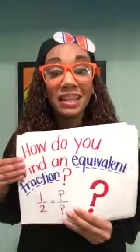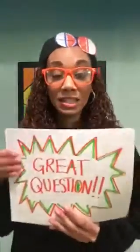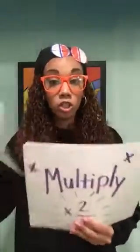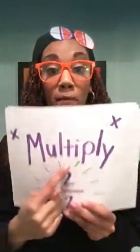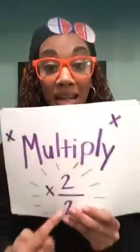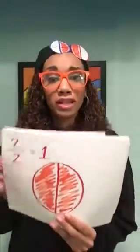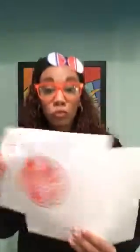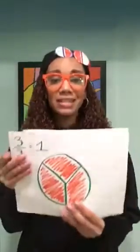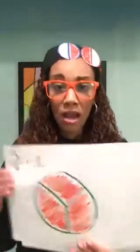How do you find an equivalent fraction? That's a great question. One thing you could do is multiply with the same number on the top and the bottom. Because 2 out of 2 is the same as 1, 3 out of 3 is the same as 1, and 4 out of 4 is the same as 1.